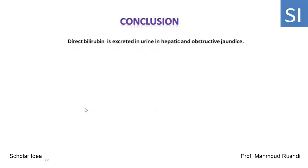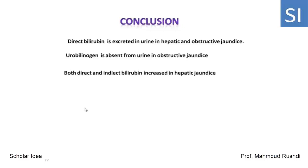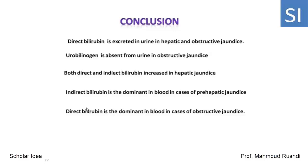Conclusion: Direct bilirubin is excreted in urine in both hepatic and obstructive jaundice. Urobilinogen is absent from urine in obstructive jaundice. Both direct and indirect bilirubin are increased in hepatic jaundice. Indirect bilirubin is the dominant bilirubin in blood in cases of pre-hepatic jaundice. Direct bilirubin is the dominant bilirubin in blood in cases of obstructive jaundice.